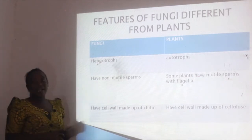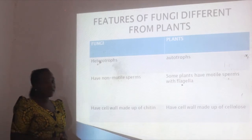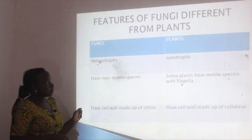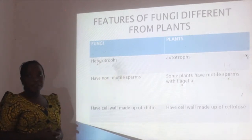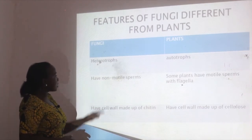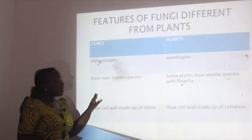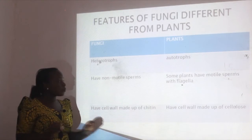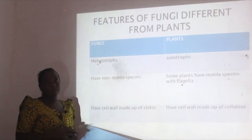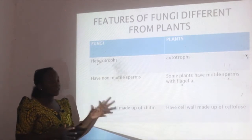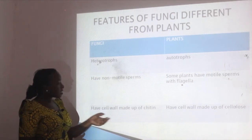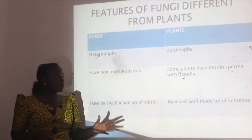Let's see the differences between fungi and plants. Fungi are heterotrophs — they cannot make their own food and depend on other organisms; most fungi feed on dead or decaying matter. Plants are autotrophs — they carry out the process of photosynthesis and make their own food. Another difference is that fungi have non-motile spores, while some plants have motile spores with flagella — for example the fern, where spores are flagellated and can swim through water to reach the egg. Also, the cell wall of fungi is made up of chitin, while the cell wall of plants is made up of cellulose.